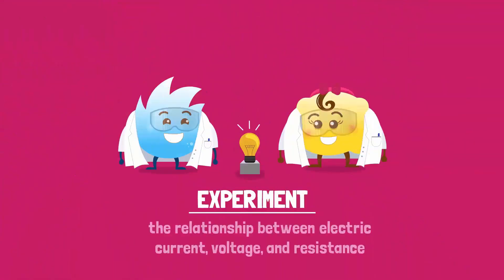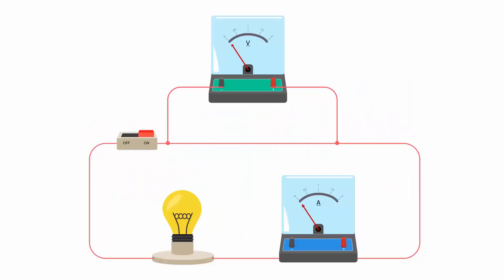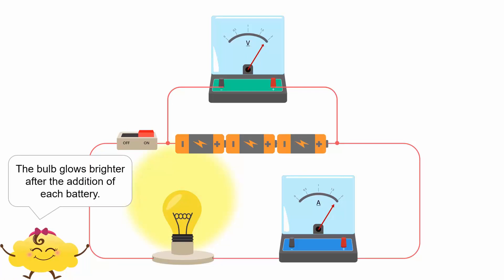Now, let's find the relationship between electric current, voltage and resistance through a simple experiment. What do you notice about the brightness of the bulb when we increase the number of batteries? The bulb glows brighter after the addition of each battery.